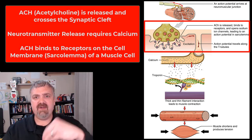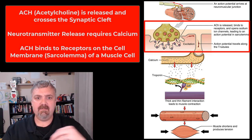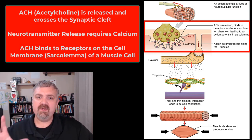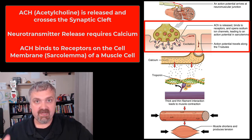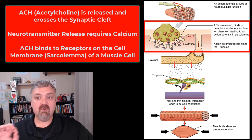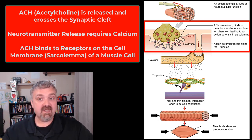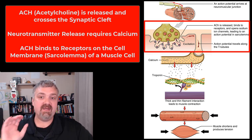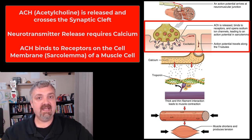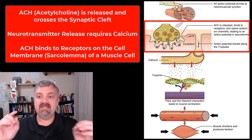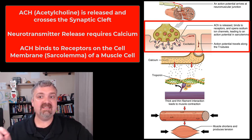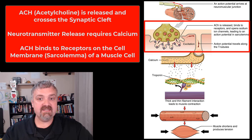At the axon terminal — the end of the axon — it's going to release a chemical messenger, a neurotransmitter. In the case of muscle contraction it's always acetylcholine, which is ACh. It actually requires calcium for neurotransmitters to be released. So we need calcium here, and you'll see we need a lot of calcium moving forward as well. So acetylcholine, or ACh, is released and it binds to acetylcholine receptors.